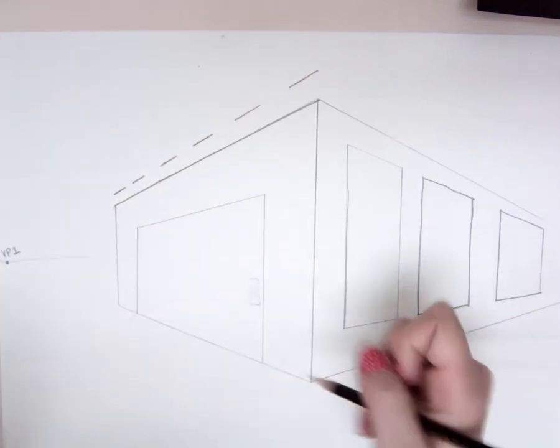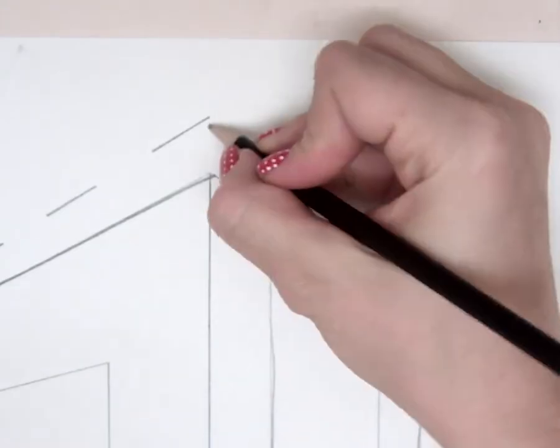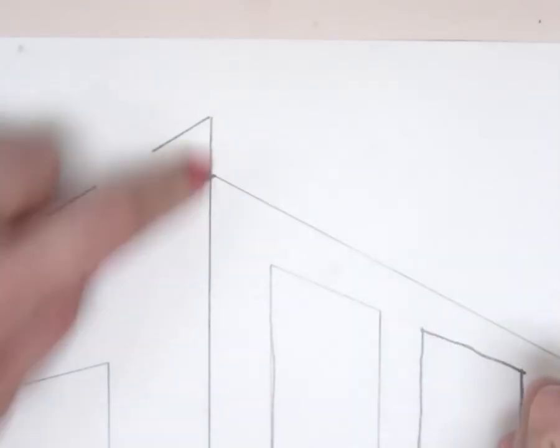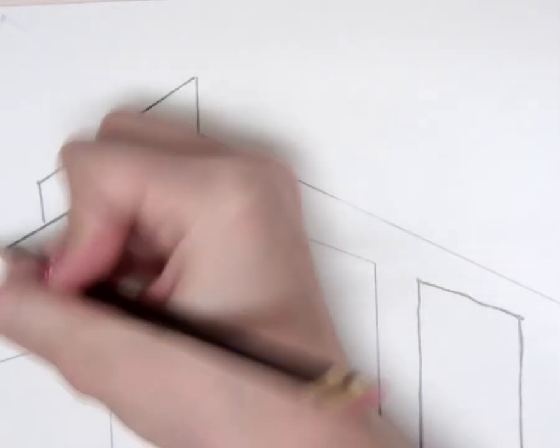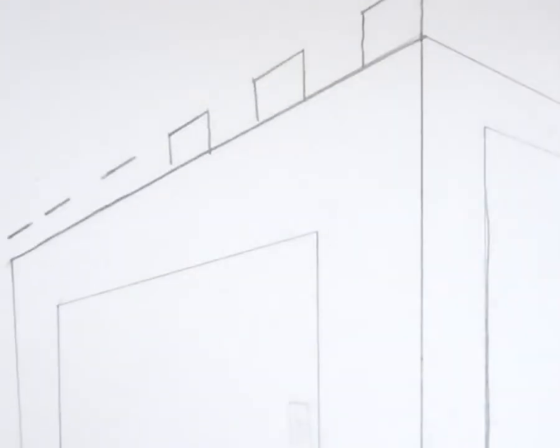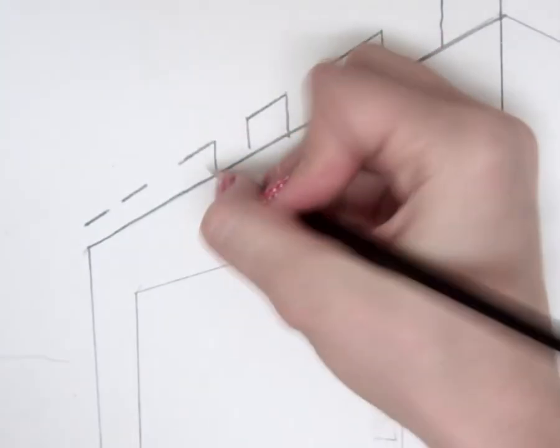Then you're going to draw vertical lines down. From here, I'm going to draw a vertical line down. It's going to match up with this, and then I'm going to continue to go down and draw those vertical lines.